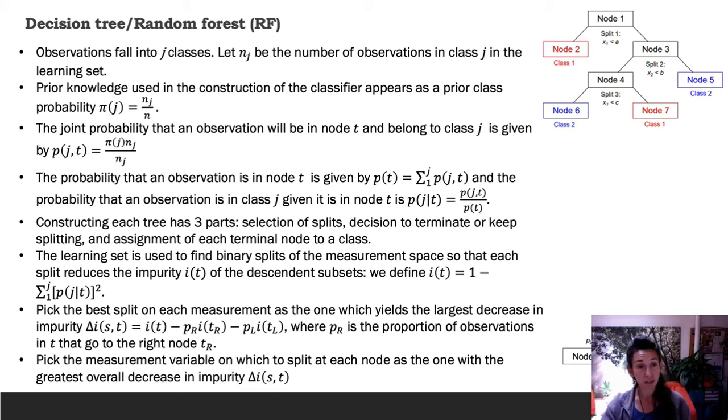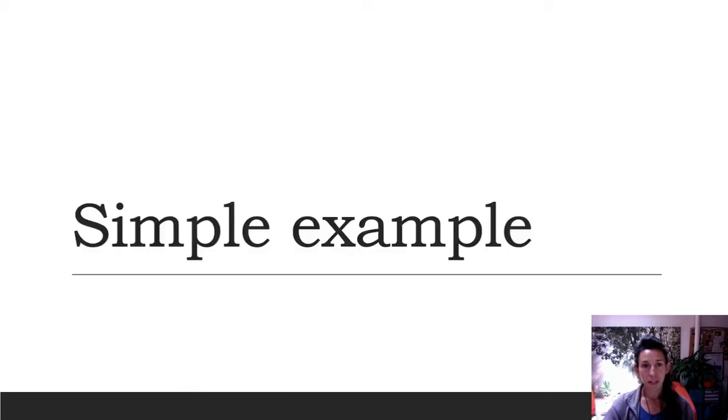How we determine where to split requires that we define an impurity measure. There are a lot of different ones that could be used. We use the Gini impurity index here. Impurity is just the number of different classes in each subset. There are three parts to constructing a tree: selecting the splits, the decision to terminate or keep splitting, and the assignment of each terminal node to a class. We declare a node to be terminal if all observations are from one class, or if a predefined criterion is met. The criterion I use here is the maximum depth of the tree, but there's other criteria that could be used as well.